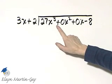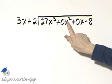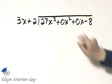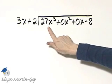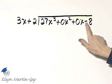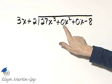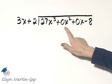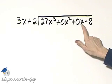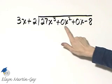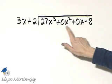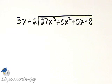Notice that for any missing powers, I wrote zero times the x raised to one of those missing powers. In other words, I had 27x cubed minus 8, so I did not have an x squared, I did not have an x, but just to keep things all lined up, I inserted 0x squared plus 0x and then my minus 8. And now we're ready to long divide.